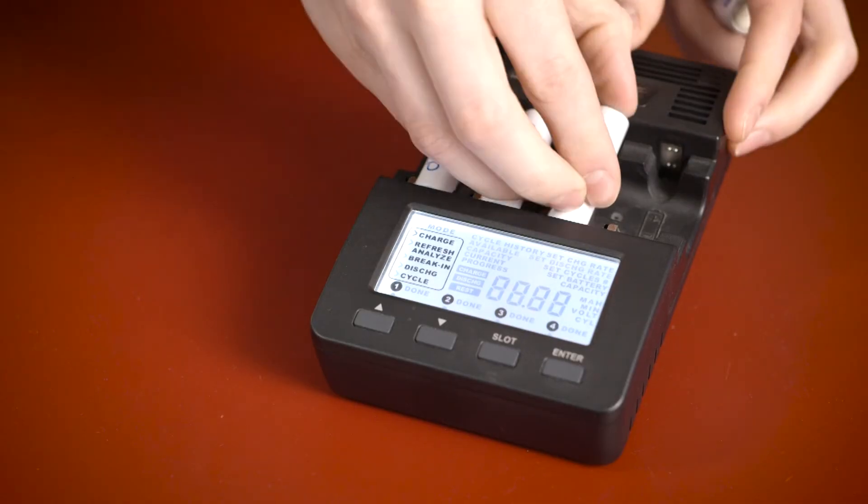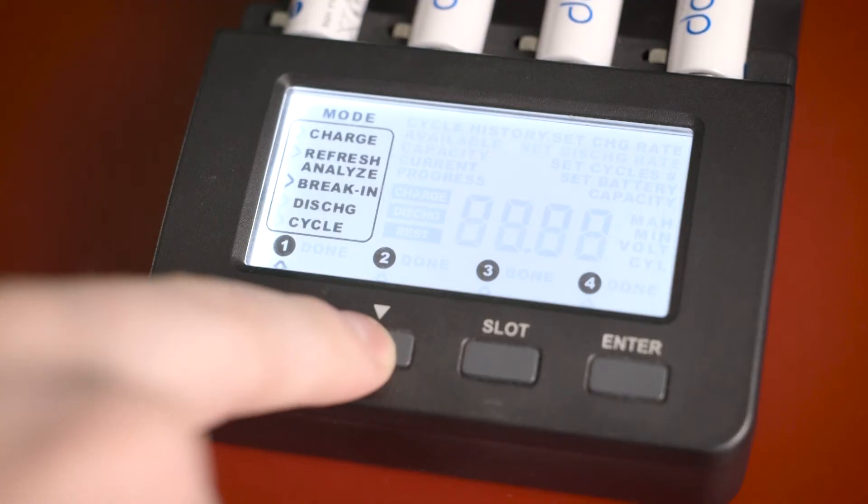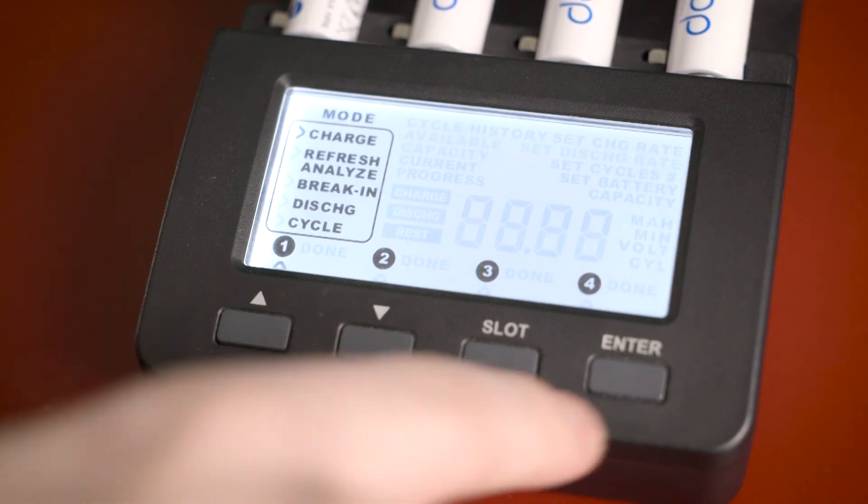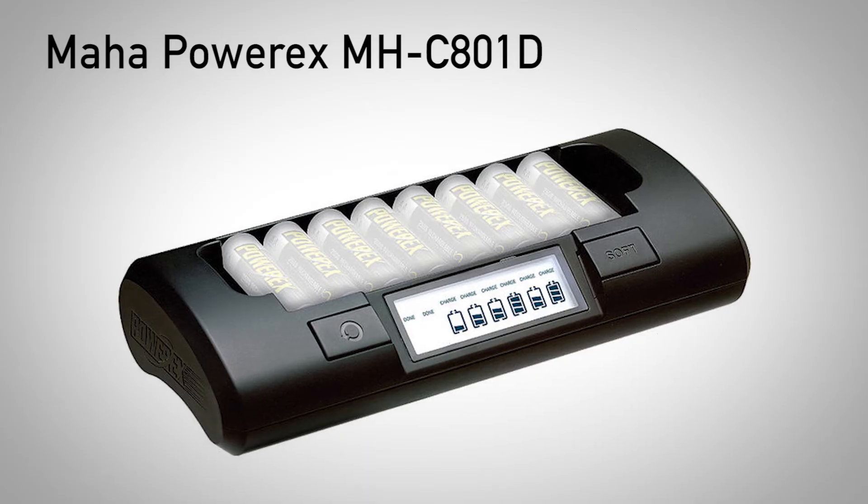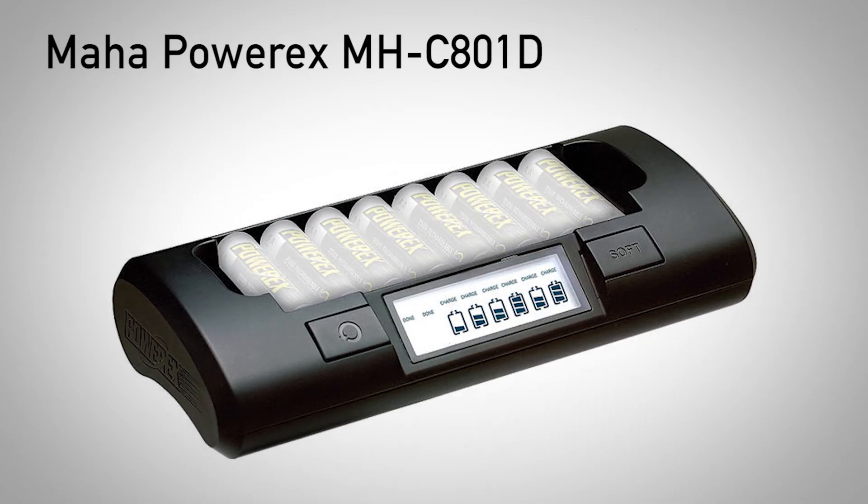Speaking of chargers, I suppose this is a good time to bring that up as well. You're going to want a high quality battery charger to keep your batteries in good shape. There are lots of options out there, but the best we've found are the following. The Maha MHC801D will charge 8 AA batteries at a time with individual charging circuits. That's important because you don't want to overcharge your batteries.